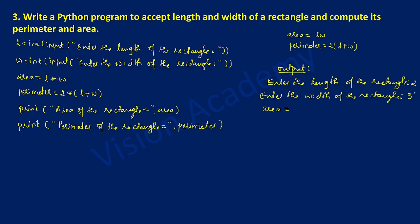Because the formula is l times w. Here 2 is stored in l and 3 is stored in w, so 2 times 3 equals 6. The value 6 will be stored in the area variable. Next we calculate perimeter: 2 times the quantity l plus w. l is 2 and w is 3. We evaluate the expression inside the bracket first: 2 plus 3 equals 5. Then 5 times 2 equals 10, so 10 will be stored in perimeter.